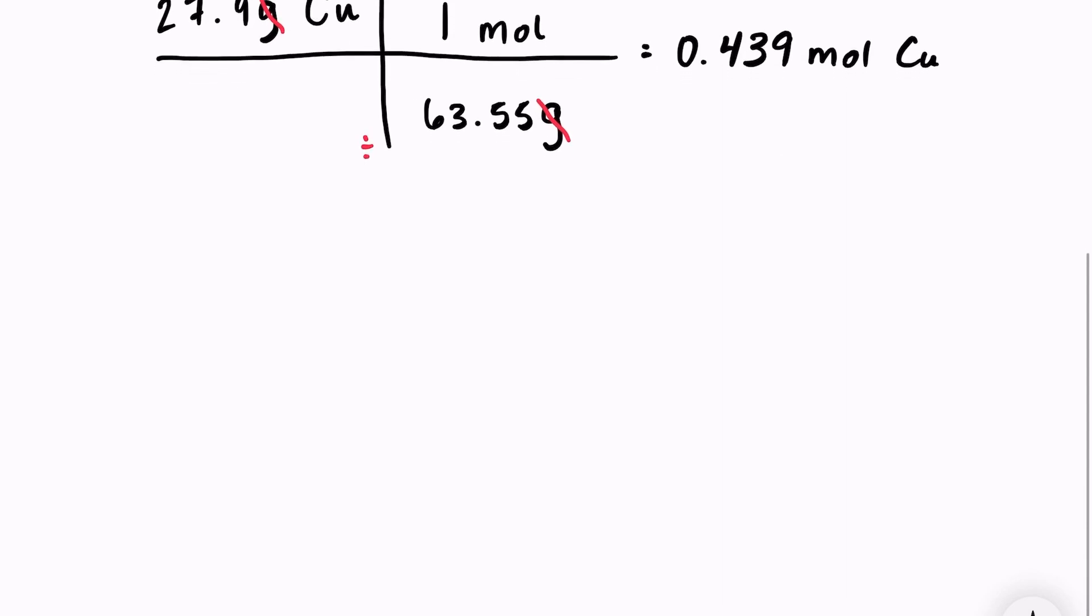We can also use this conversion factor when we're working with compounds or molecules. So what if you were doing a lab, and in your lab manual, it says that you need to obtain 0.75 moles of salt, NaCl. You need to obtain 0.75 moles of salt for your experiment, and you need to know how much salt you need to weigh out on your scale.